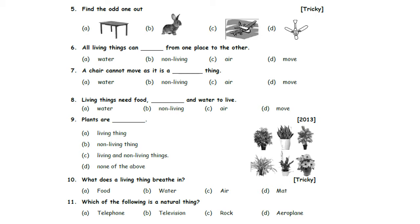Fifth one: find the odd one out. Option A: Table. Option B: Rabbit. Option C: Aeroplane. Option D: Ceiling Fan. They are asking to find the odd one out. Option A, C, and D are non-living things. Only Option B, Rabbit, is a living thing. So, Option B is the correct answer.